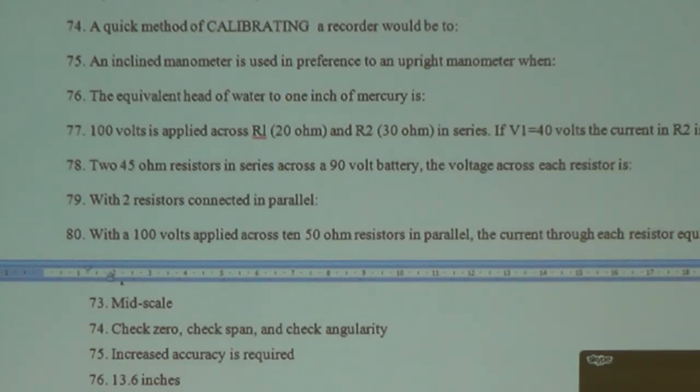In order to reduce angularity errors, the input and output lever must be parallel at mid-scale. Equivalent head of water to one inch of mercury is 13.6 inches of water, but you can leave it. This is not something which we are going to remember.